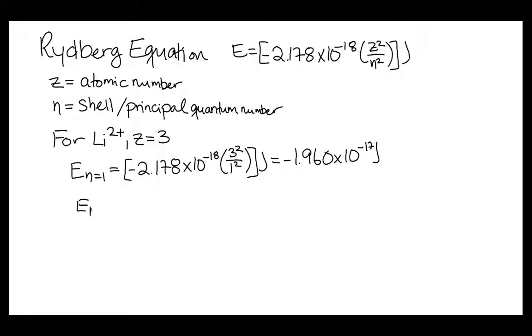If we work our way through the n equals 2 energy level, where we replace the n value, instead of it being 1, we make it 2, what we get is that the energy is negative 4.901 times 10 to the negative 18 joules.